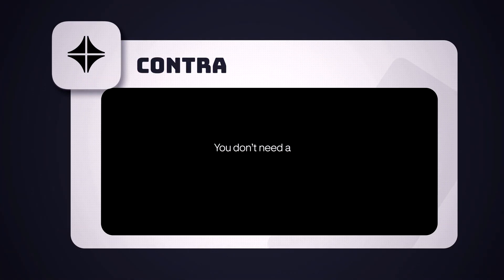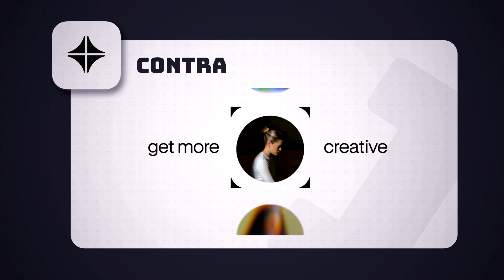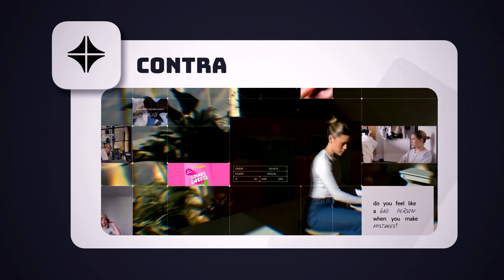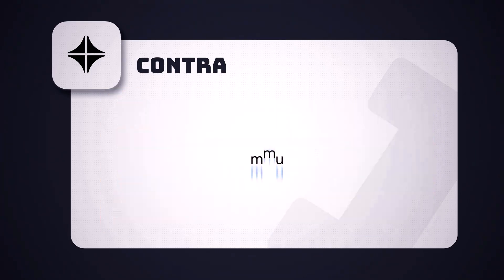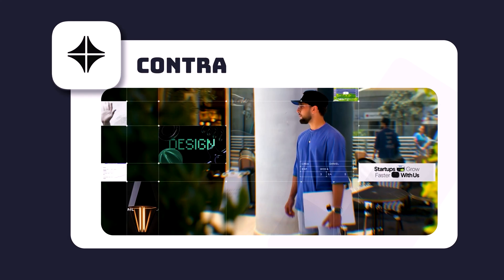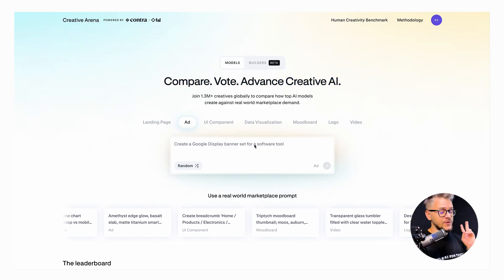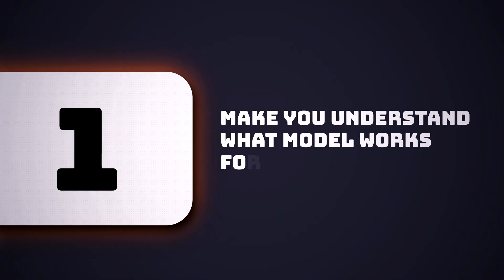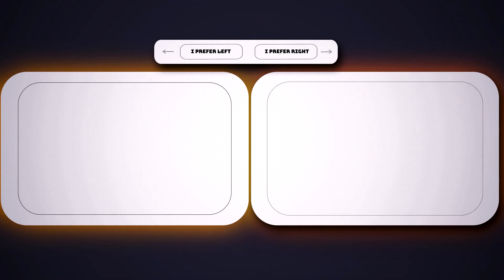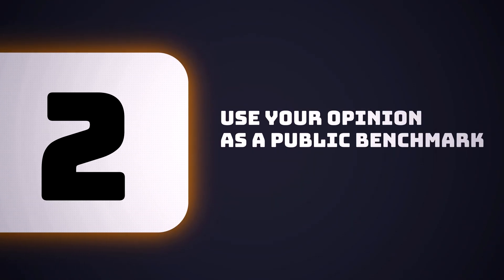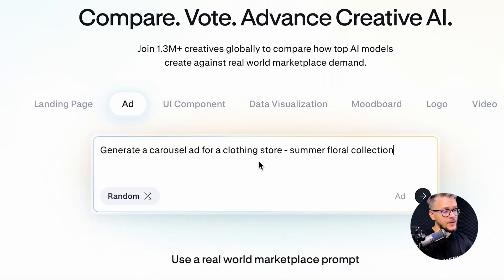The first tool on our list is Contra, a platform and creative network with a database of more than 1.3 million creatives. You can compare AI models generating those creatives head to head and vote on the outputs. Their slogan is 'Compare, Vote, Advance Creative AI.' This tool is really useful for understanding which model works for you.